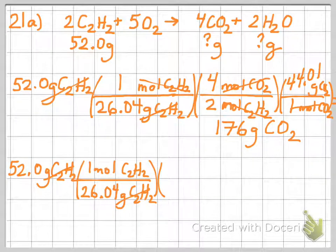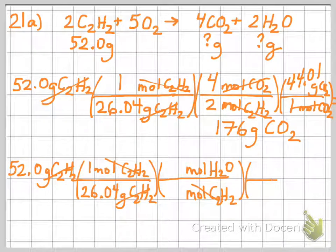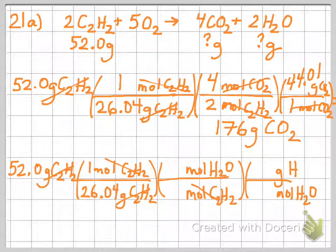For our second one, it's going to look a whole lot like the first one. So we start with our 52 grams of acetylene. We're going to use molar mass to convert grams to moles. Then we're going to have moles of acetylene in the bottom. And moles of water, because that's what we're changing to on the top. And moles of water on the bottom. And molar mass to convert moles to grams.